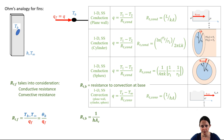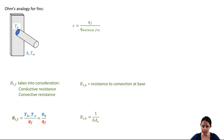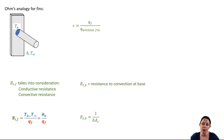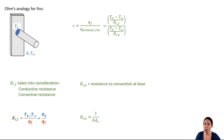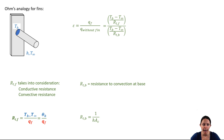We're trying to tie the thermal resistance concept to fin efficiency. We can take the equation for fin efficiency and define the heat transfer rate with the fin and without the fin as a function of the temperature gradient and the thermal resistance associated with each case. Because the temperature gradient cancels out, we're left with just the ratio of the thermal resistances.